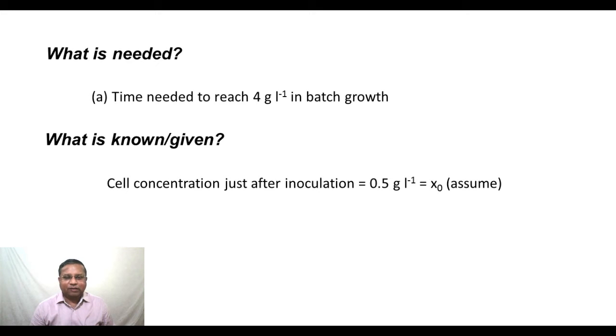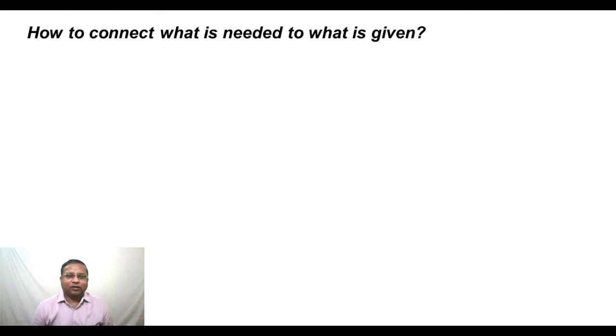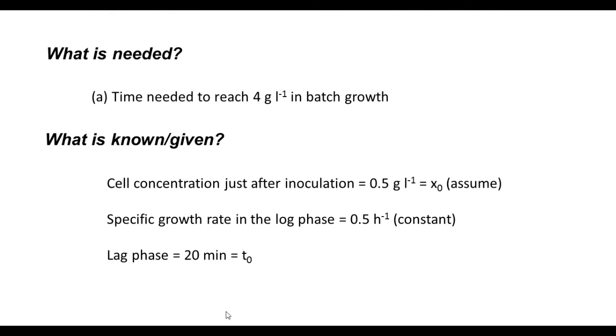What is known or given? The cell concentration just after inoculation is 0.5 gram per liter. Therefore, that can be taken to be x naught. We are assuming that there is not much of a change in cell concentration during the lag phase. Therefore, x naught, which is the cell concentration at the beginning of the log phase, is also taken to be 0.5 gram per liter. The specific growth rate in the log phase is given as 0.5 hour inverse, which we are taking as a constant. The lag phase is 20 minutes, which is T0. And those are the things that are known.